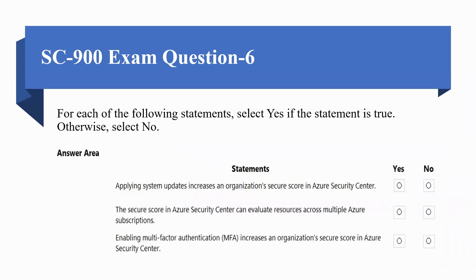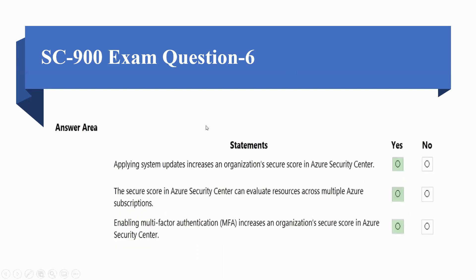Coming to question number 6: for each of the following statements, select yes if the statement is true, otherwise select no. The statements are: A — applying system updates increases an organization's secure score in Azure Security Center; B — secure score in Azure Security Center can evaluate resources across multiple Azure subscriptions; C — enabling multi-factor authentication increases an organization's secure score in Azure Security Center. The first statement — applying system updates increases the secure score — is true.